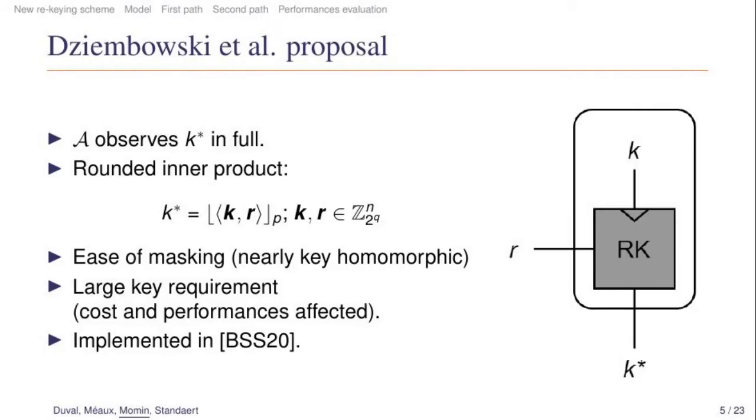On the other side of the spectrum, Dobraunig et al. made a proposal in 2016 for which they consider that an adversary is able to obtain the value of k* in full. They studied the possibility to use a weak pseudo-random function as a rekeying function. More practically, it consists in a rounded inner product as defined on the slide. Their solution is not key homomorphic but still nearly key homomorphic, which allows to have masking overhead with a complexity close to linear in terms of the number of shares. However, this solution still suffers from a large key requirement and the manipulation of it leads to rather poor performances.